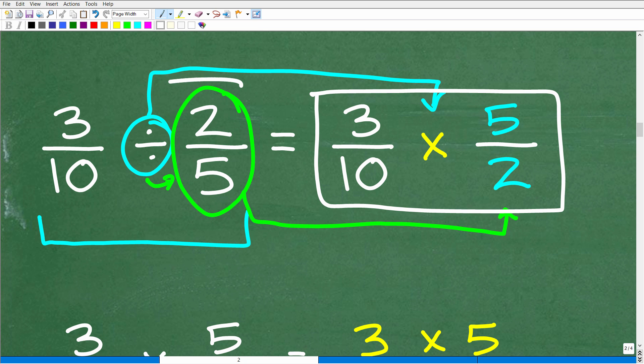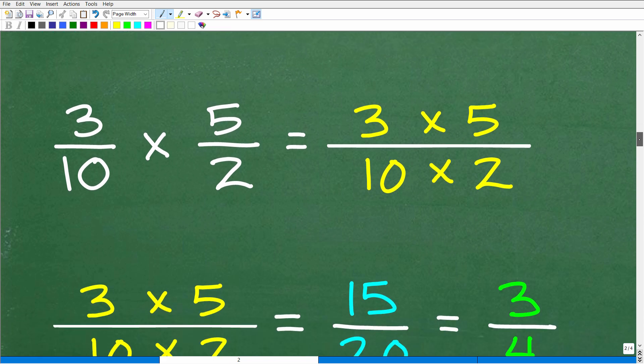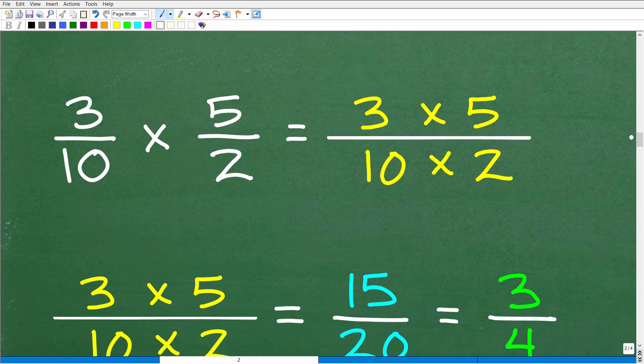So now what we have is an equivalent problem. If we figure this out, it's the same thing as doing this. So now we have to answer this question, 3 over 10 times 5 halves. And this is actually quite easy. So let's talk about how to multiply fractions. When you're multiplying fractions, all you need to do is simply multiply the respective numerators and denominators. Just going to multiply across. So 3/10 times 5/2 is going to be 3 times 5.